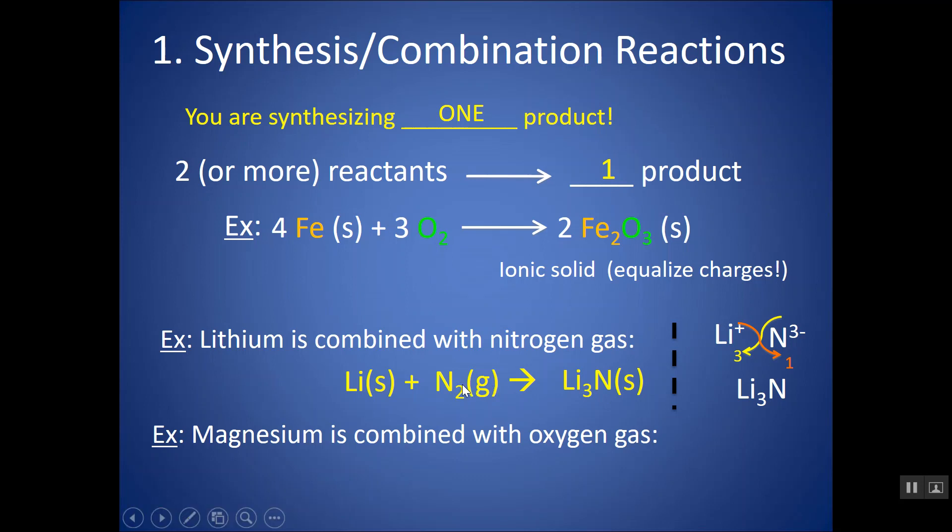So don't worry about different subscripts on different sides. We will take care of that by adding coefficients. So there's two nitrogens here. I need a 2 in front to make sure nitrogen is balanced, and now that changes lithium. Lithium, there's a 3 subscript already, so 2 times 3 is 6, so I need a 6 in front. This is my balanced synthesis reaction.